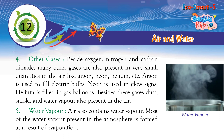Other gases: Besides oxygen, nitrogen, and carbon dioxide, many other gases are also present in very small quantities in the air, like argon, neon, helium, etc. Argon is used to fill electric bulbs. Neon is used in glow signs. Helium is filled in gas balloons. Besides these gases, dust, smoke, and water vapor are also present in the air.